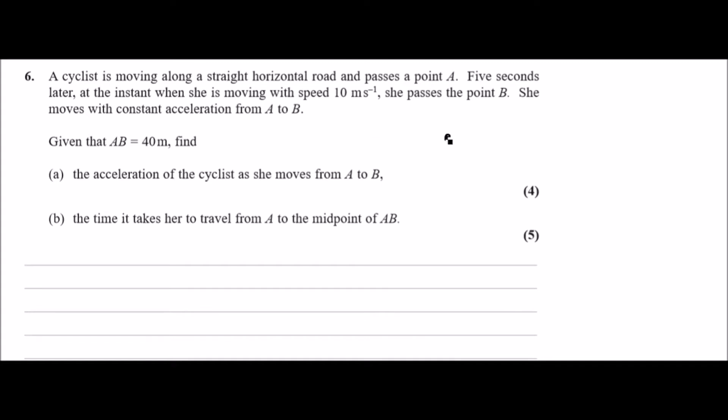Let's firstly draw a straight line from A all the way to B. It's a straight horizontal road. As soon as she passes point A, five seconds later she gets to point B at the speed of 10 meters per second. This is at time 5, so it takes five seconds from A to B.